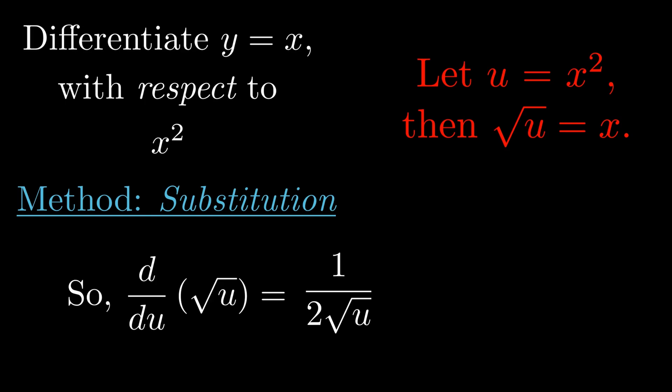Evaluating this derivative, we get 1 divided by 2 times the square root of u. Now think about what the square root of u is equal to and what u is equal to by paying attention to the substitution we made in the top right-hand corner.